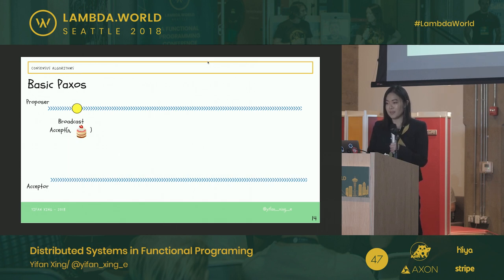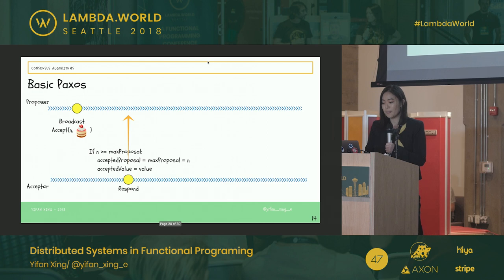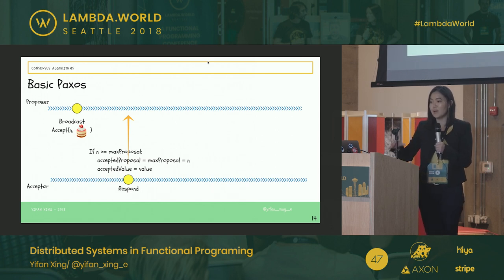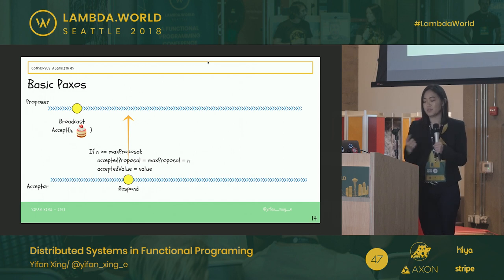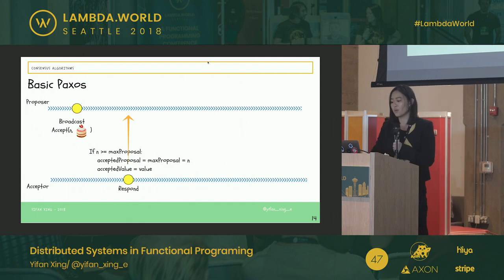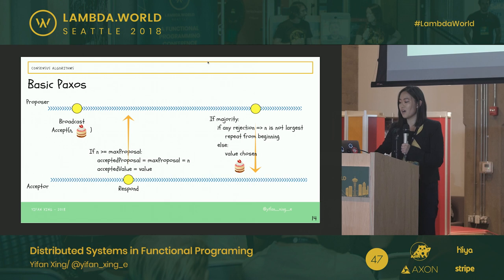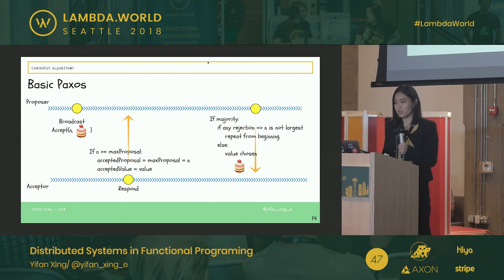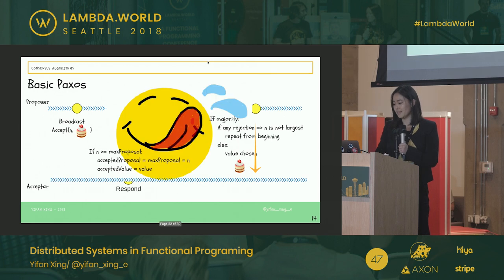When the acceptor receives the message, it will check: is this number the largest proposal number I've ever seen? If true, the machine will send back a promise saying it will only look at other values if they have a larger proposal number. As a proposer, if we get a majority of servers respond to us, we're the first to propose and can go ahead and actually propose a value. We send an accept message with the proposal number and value. If we get a majority of responses and no rejections, the value is chosen — now we have consensus and we can have cheesecake.